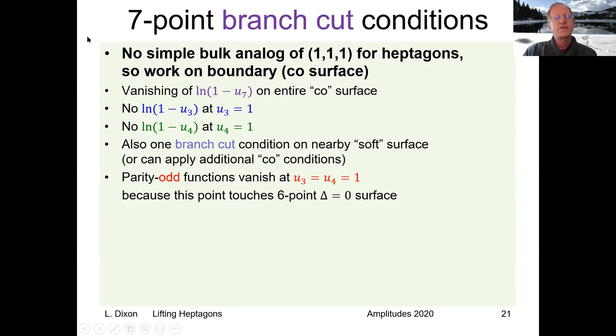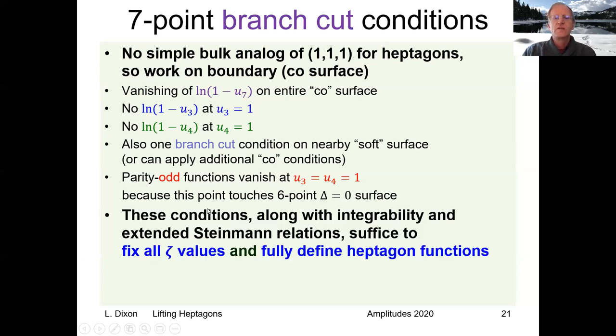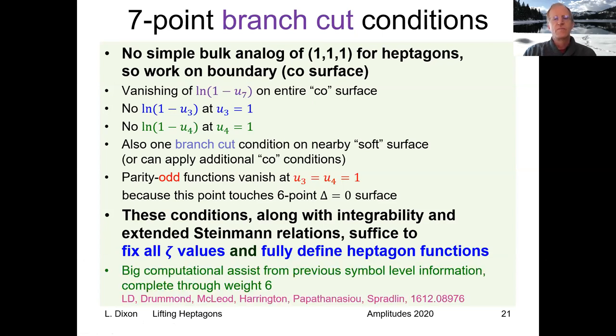We impose a set of branch cut conditions, which I'm going to be very brief about. There's this vanishing of the log(1-U7) on the whole surface. When we get near the lines U3 and U4 equals one, we forbid bad branch cuts there. There is one other one you can apply nearby. When you've imposed all of the correct constraints, you find that all those zeta values get fixed. So we can fully define the heptagon functions in the neighborhood of this surface. By the way, we got a big computational assist because we knew this structure of the function space at symbol level through weight six from previous work.